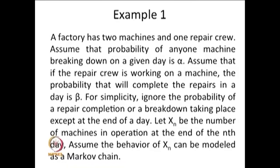I am going to explain the discrete time Markov chain with three simple examples. The first example is as follows: a factory has two machines and one repair crew. Assume that the probability of any one machine breaking down on a given day is alpha. Assume that if the repair crew is working on a machine, the probability that they will complete the repairs in a day is beta.